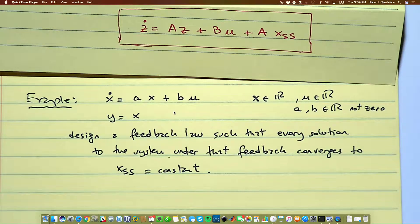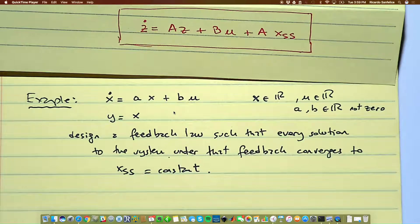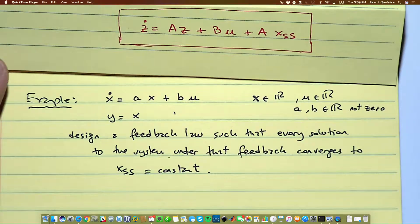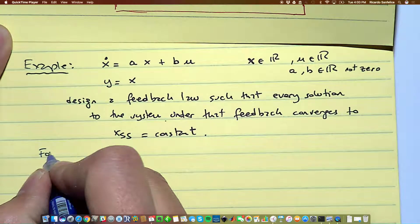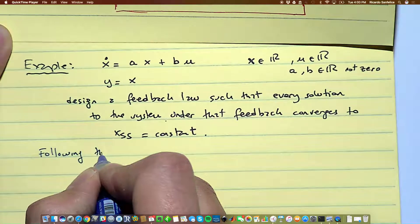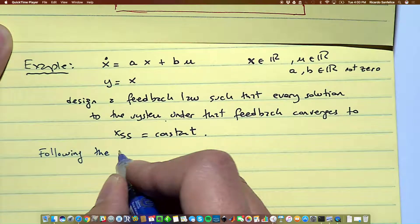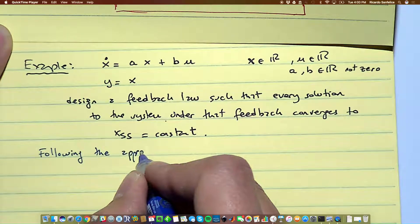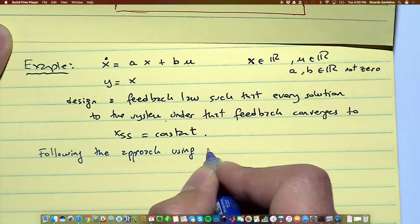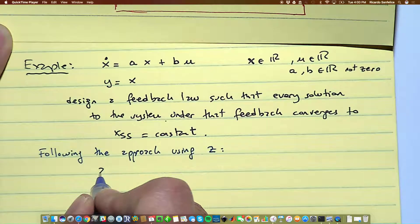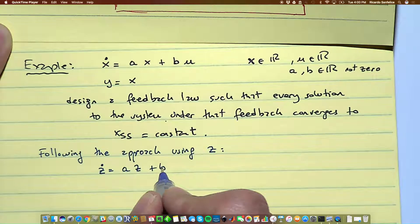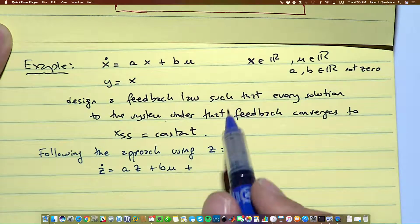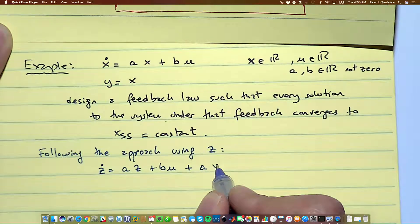Okay, so the first try, which is the one I suggested you start, would be following the approach using z. We obtain z dot equal to a times z plus b times u plus the additional term which is a times x_ss.